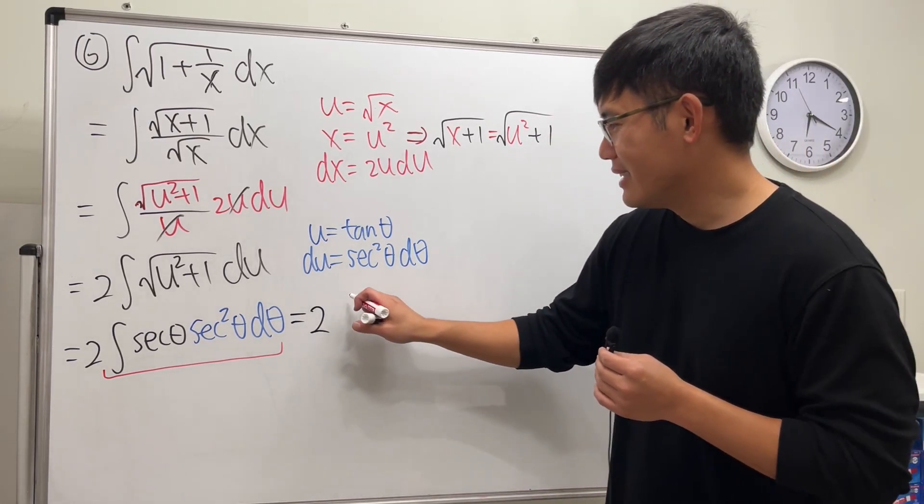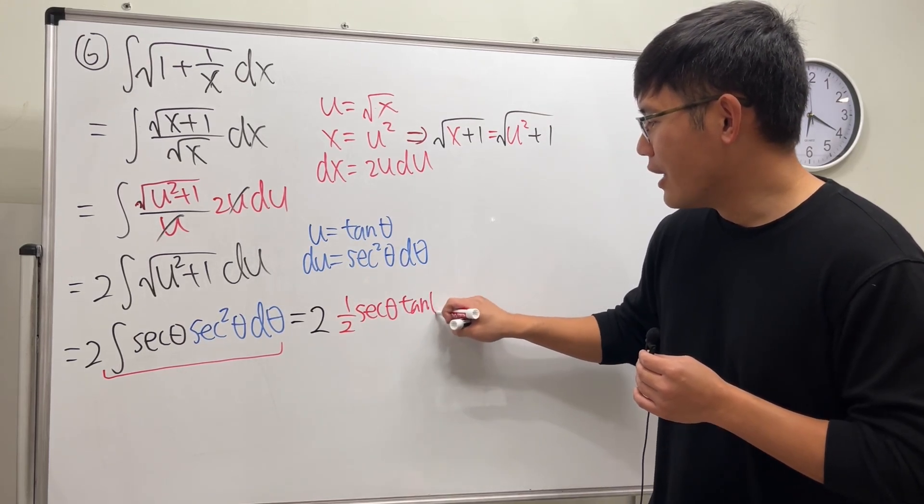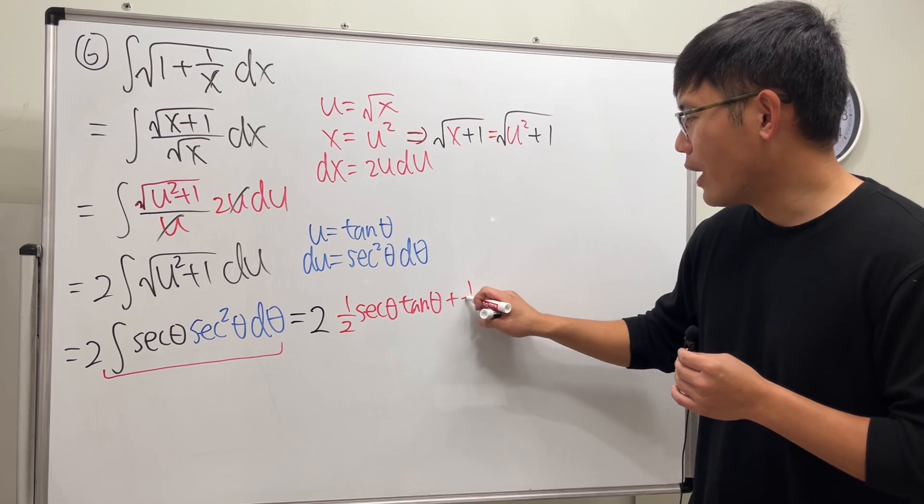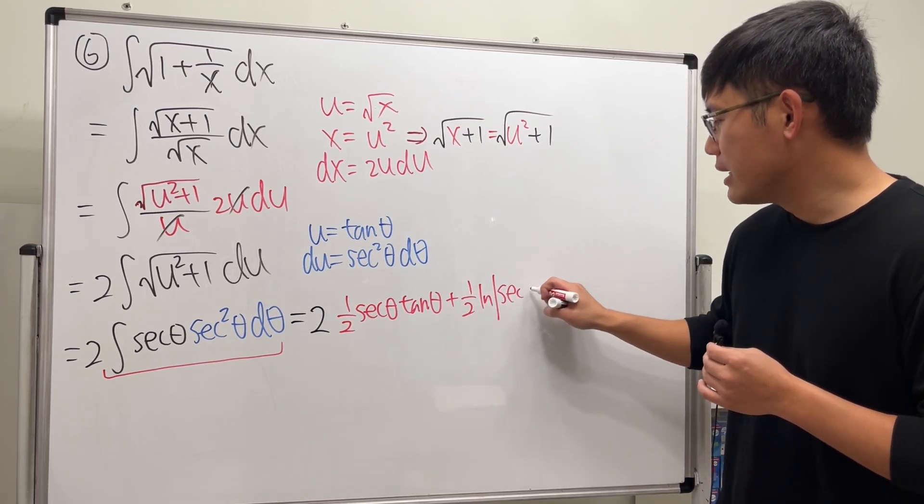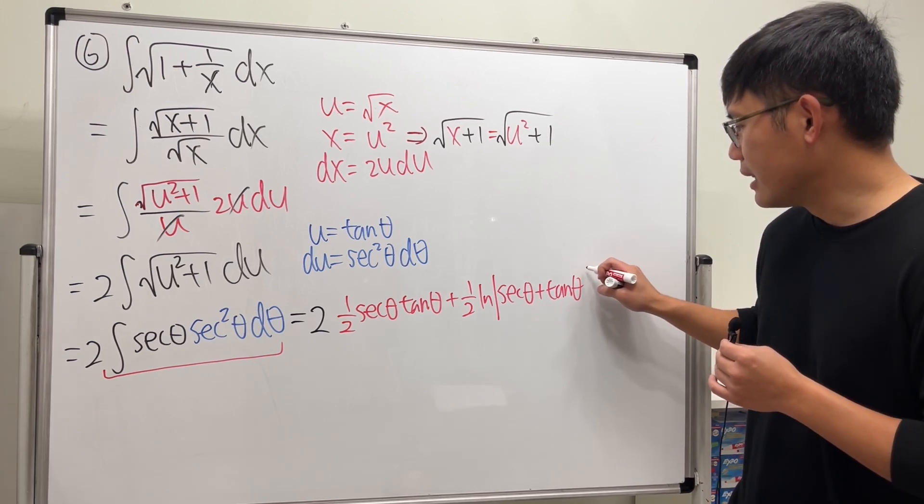So I will tell you guys what the answer is. That's 1 half secant theta tangent theta plus 1 half ln absolute value secant theta plus tangent theta.